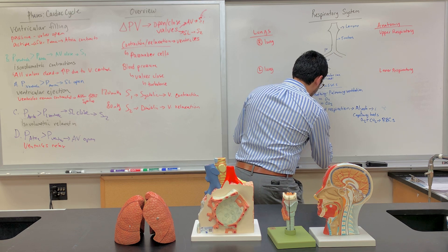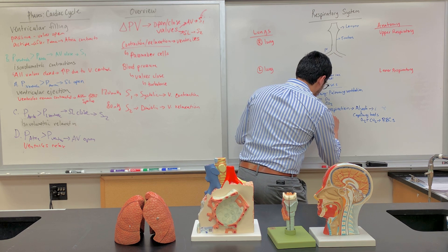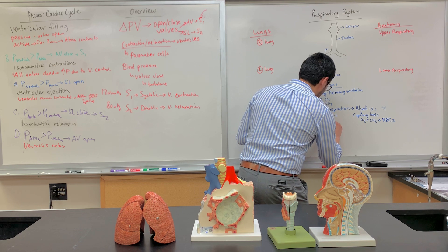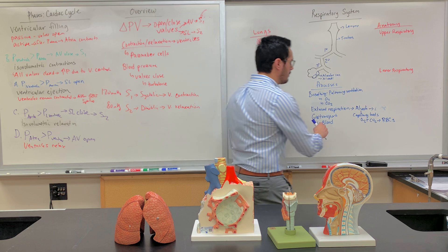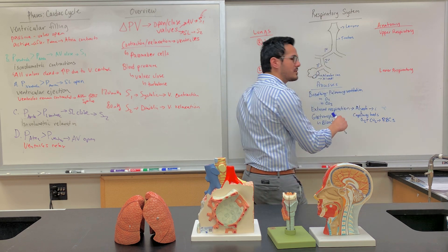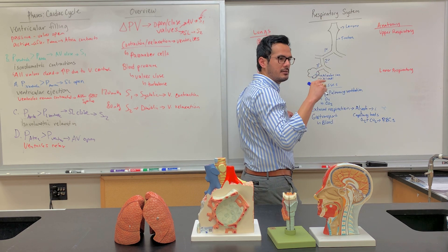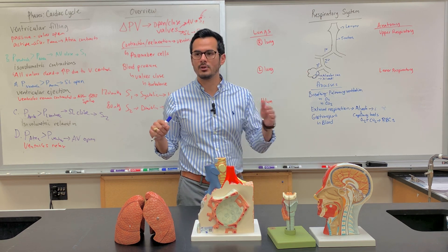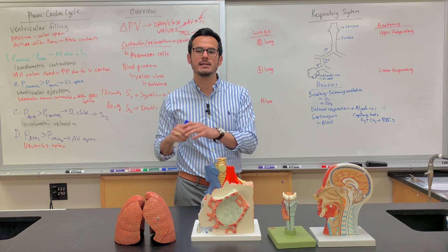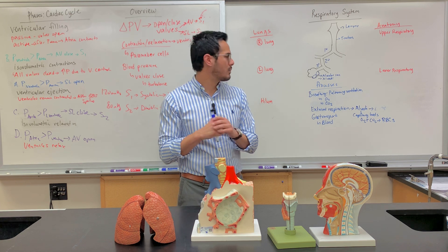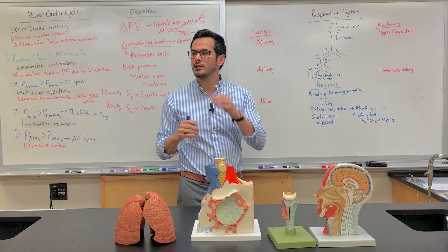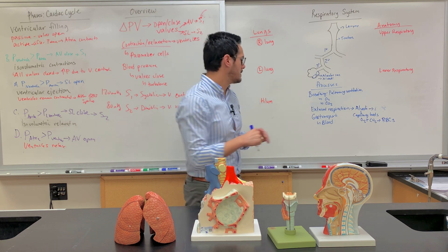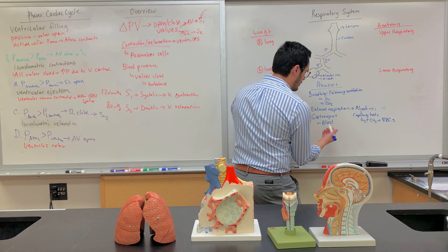The next thing we're going to discuss is gas transport. For gas transport, we are using the blood as a medium. Once these red blood cells get the oxygen loaded, they're going to travel through the arteries and then get to the capillary beds. Once they get to the capillary beds, they're going to dump off the oxygen and pick up the CO2. So this is gas transport for blood.